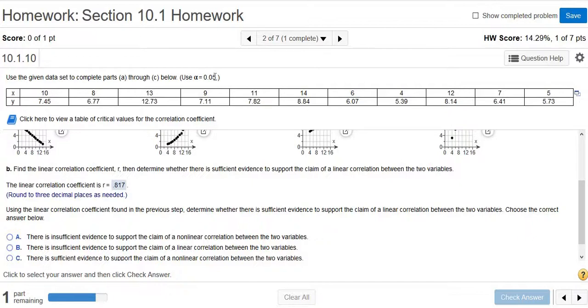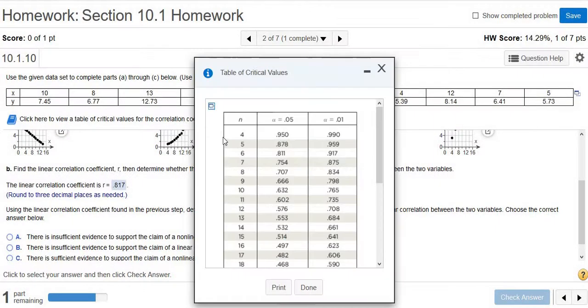...and you need N, which is the number of pairs. So 1, 2, 3, 4, 5, 6, 7, 8, 9, 10, 11. So then you click this little box, and then you go down to 11, and the 0.05, it's where they meet. So 0.602, that's our critical value.